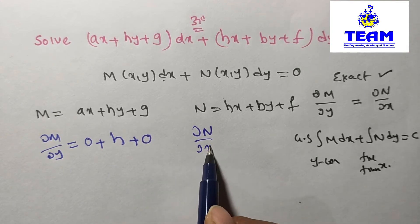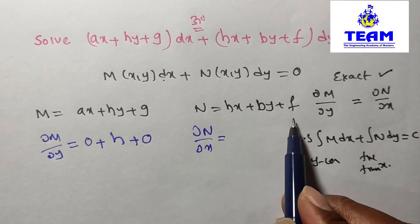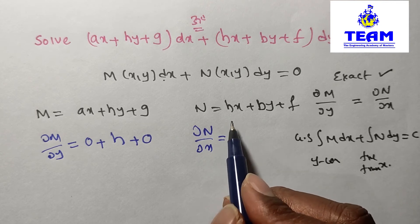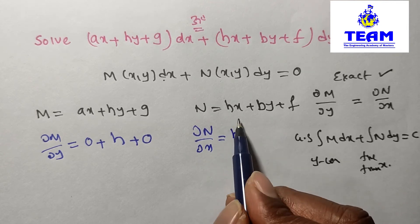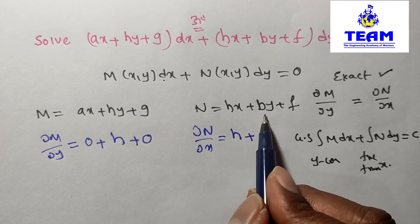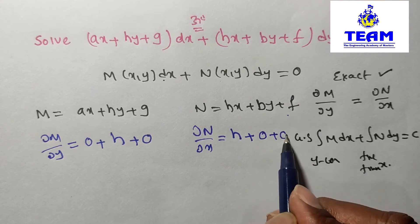Now ∂N/∂x. I am differentiating N partially with respect to x. N has three terms. Differentiating N with respect to x: h is a constant, x derivative is 1, so 1 times h is h. Plus by is independent of x, so its derivative is zero, plus f derivative is zero.